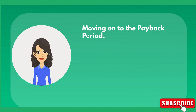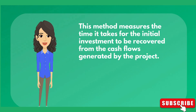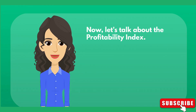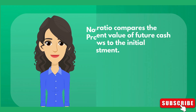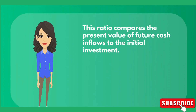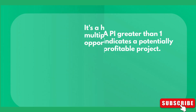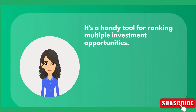Moving on to the payback period: this method measures the time it takes for the initial investment to be recovered from the cash flows generated by the project. While it's a straightforward technique, it doesn't consider the time value of money. Now, let's talk about the profitability index. This ratio compares the present value of future cash inflows to the initial investment. A PI greater than 1 indicates a potentially profitable project, and it's a handy tool for ranking multiple investment opportunities.